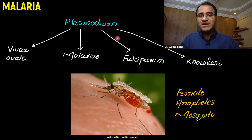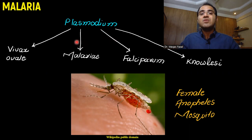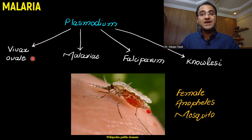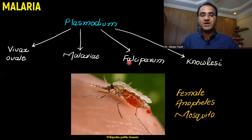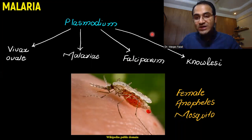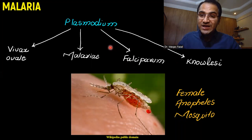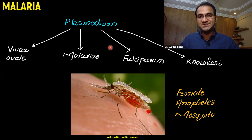Plasmodium has four different types: plasmodium vivax and plasmodium ovale, which are very common; plasmodium malariae; and plasmodium falciparum, the very dangerous form of plasmodium. These are the different types of plasmodium parasites.